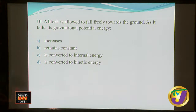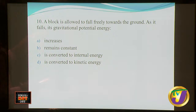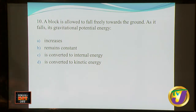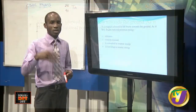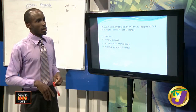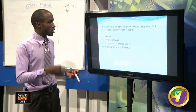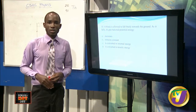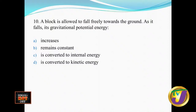A block is allowed to fall freely towards the ground. As it falls, its gravitational potential energy — anything above the surface of the earth has potential energy by gravity. If you allow it to fall, the potential energy won't increase — it will actually be lost, because the higher up you are, the more potential energy you have. So at the highest point, maximum potential energy. As it falls, you're losing potential energy because you're losing height. It's not converted to internal energy. So it is converted to kinetic energy — energy associated with motion. If you know the conservation principle, potential goes to kinetic and vice versa.